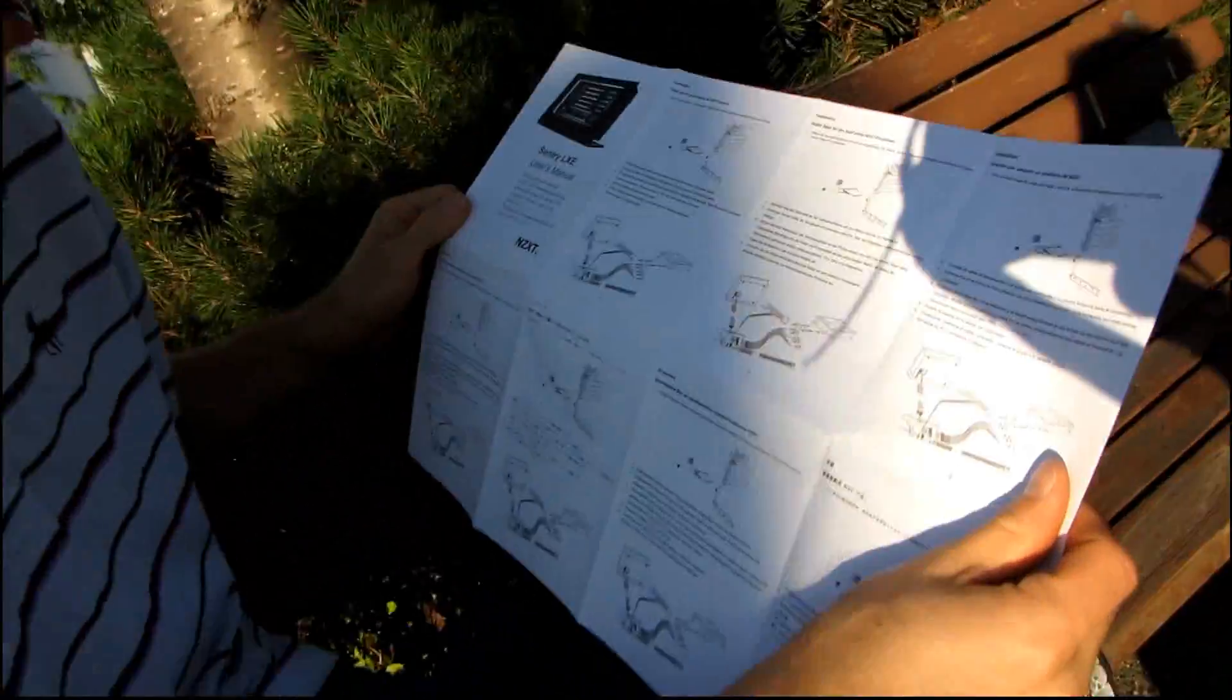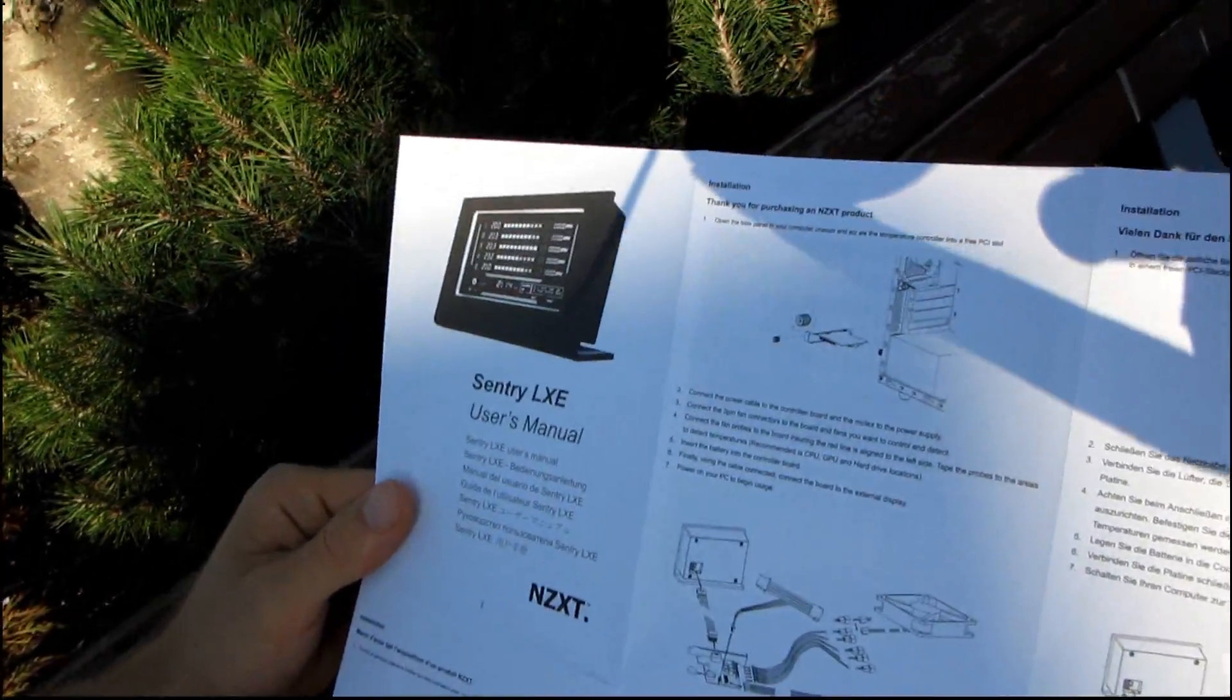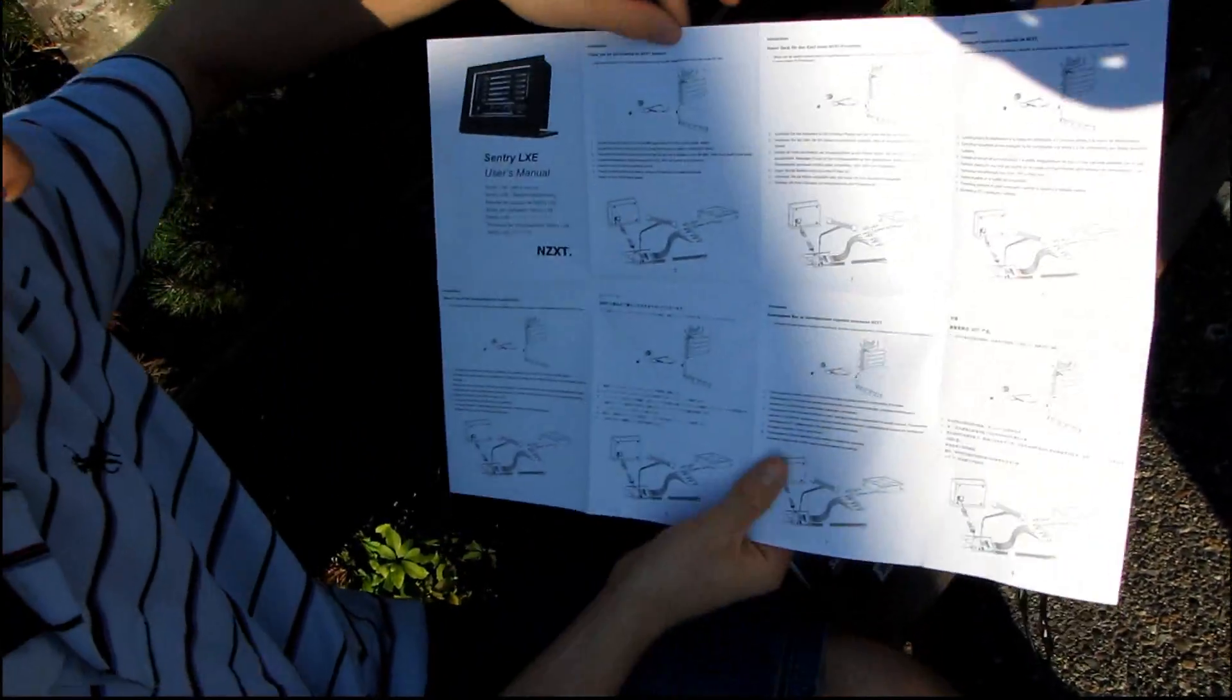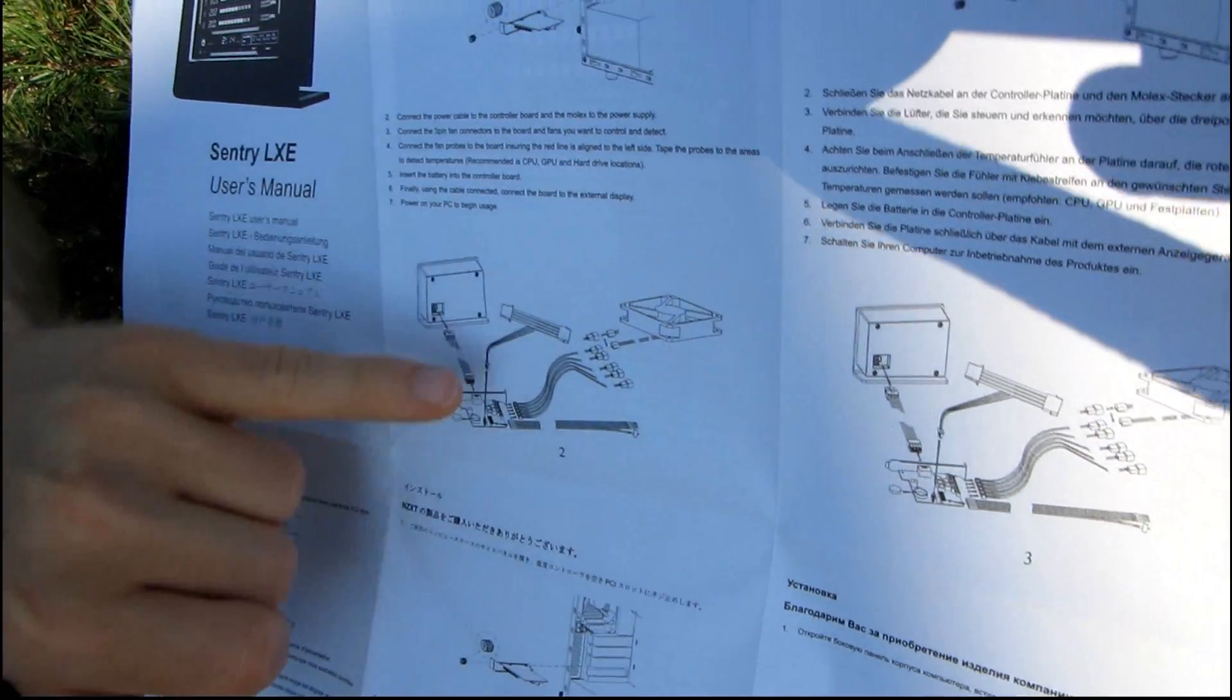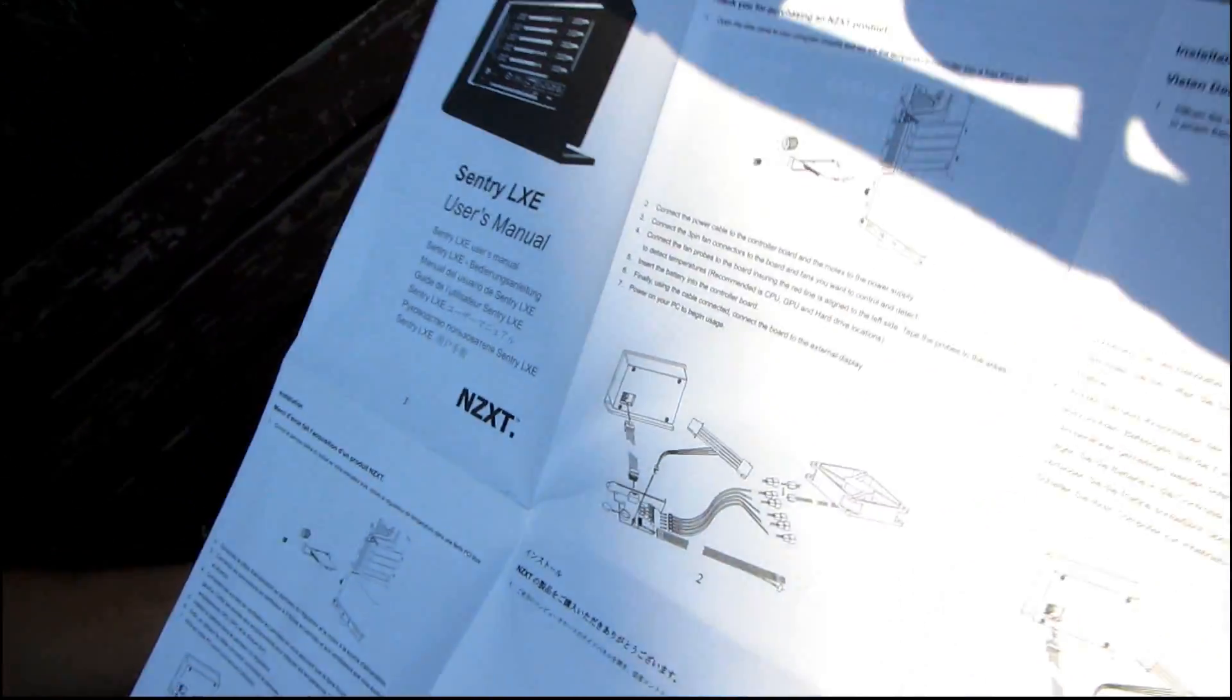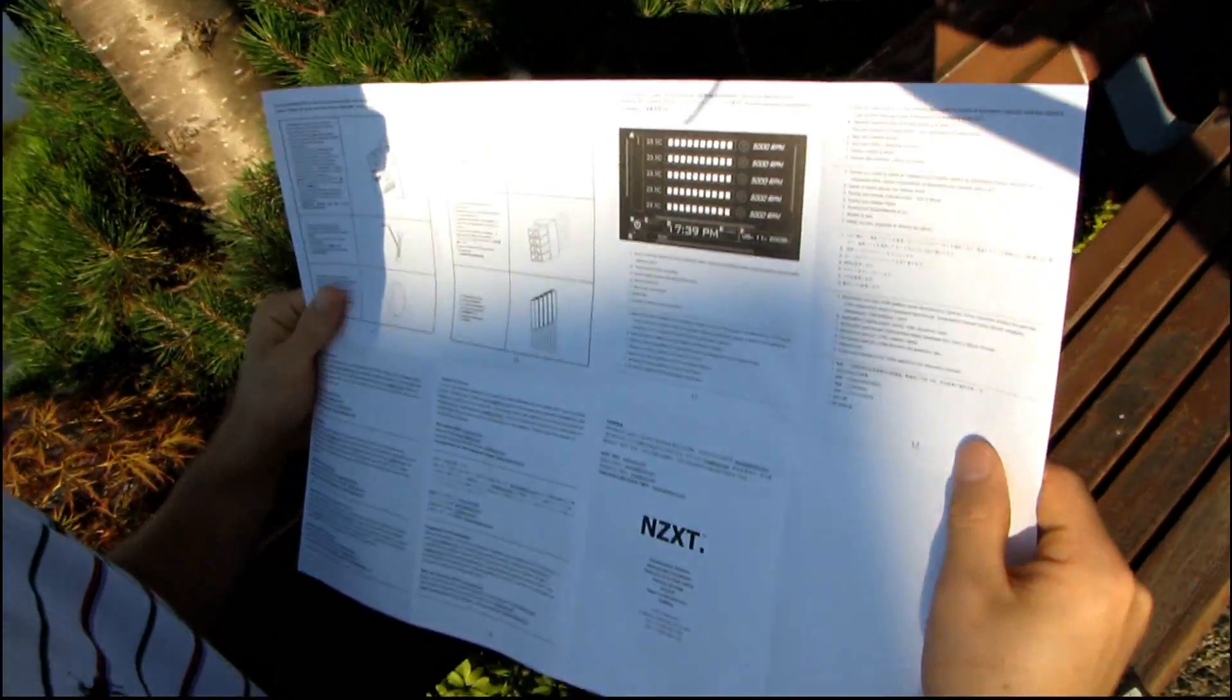So here's the user manual. One panel? No, two panels. This is the English one right here. So it shows you connect the little PCI card here, you connect the 3-pin fan connectors to the board and the fans you want to control and detect. Oh this is interesting, well here why don't we pull this out and have a closer look. Hold on, let's see what else we have here.